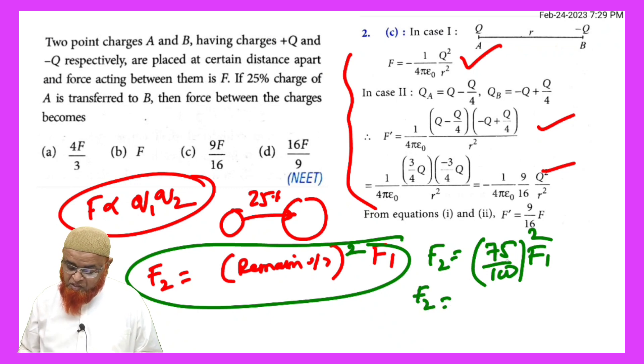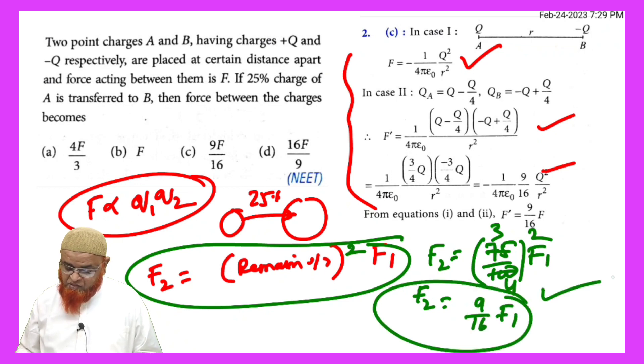You can write F2 is equal to, this is 3 times and this is 4 times. That is 9 by 16 times of F1. So this is going to be your answer in a simple shortcut method. Hope you have enjoyed. Thank you.